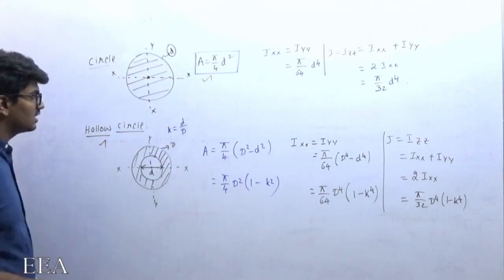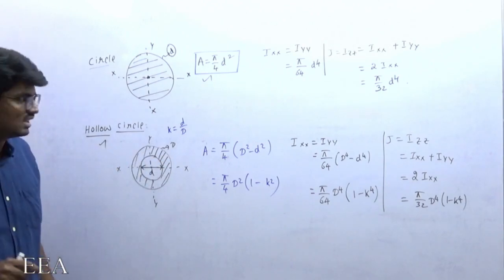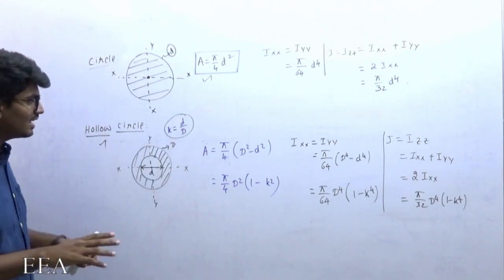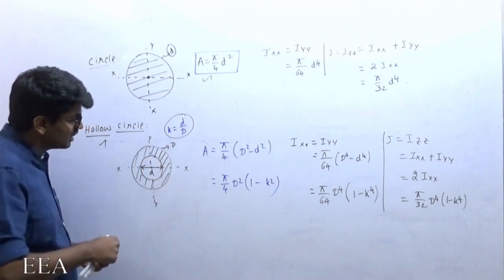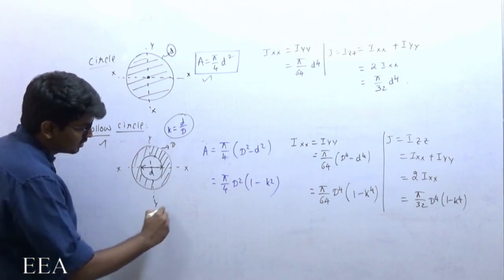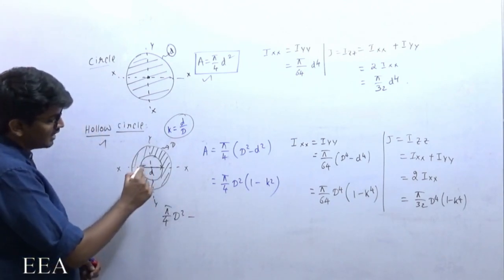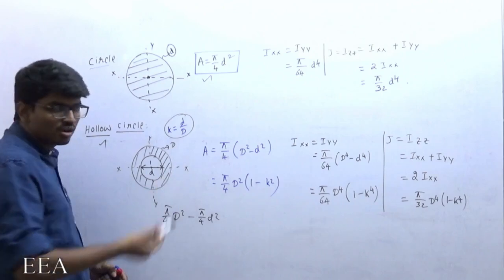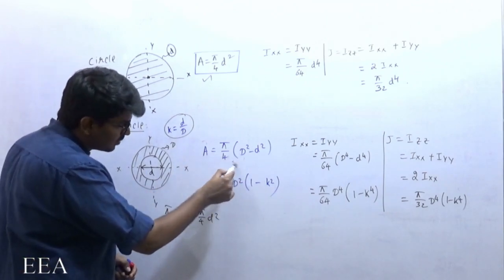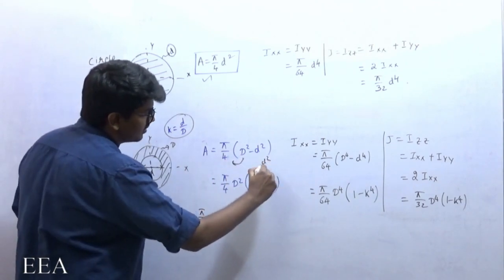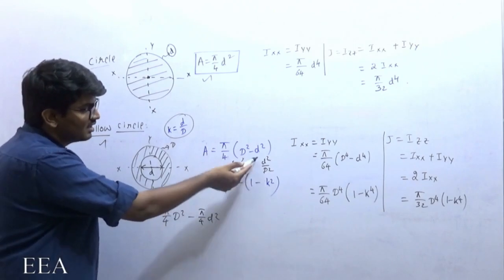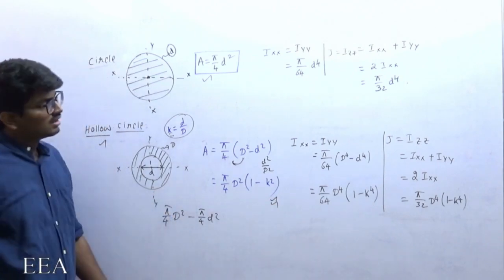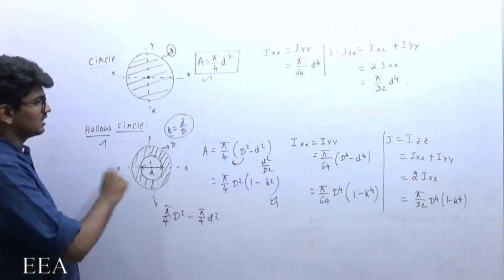Next is a hollow cylinder, with inner diameter d and outer diameter D. We take the ratio k = d/D. To find the area, take the total circle area π/4 · D² minus the empty inner area π/4 · d². Taking π/4 · D² common and substituting k = d/D, the area becomes π/4 · D²(1 − k²).